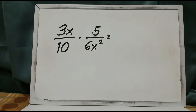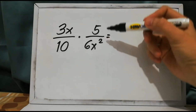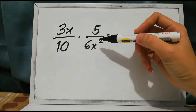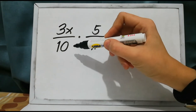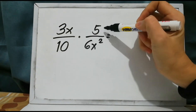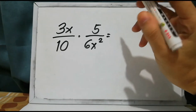In multiplying rational algebraic expressions, it's just the same as multiplying fractions, just like what we did a while ago. So let us find the product of these expressions: we have 3x over 10 times 5 over 6x squared.